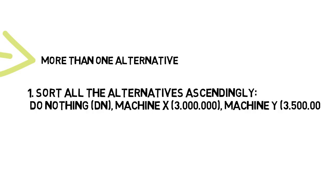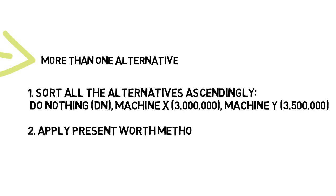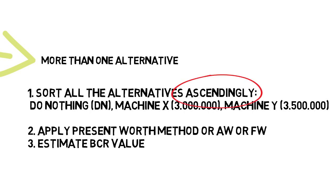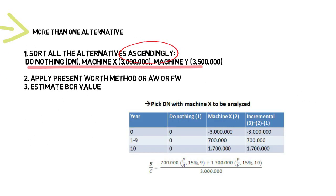We have several things to do. First, we sort all the alternatives in ascending order. Machine Y has the highest initial investment, followed by Machine X. We then define the iteration order: Do Nothing versus Machine X, then comparing the winner against Machine Y. We apply the present worth method — or annual worth or future worth — you can choose whichever is simpler to calculate.